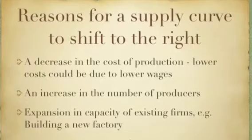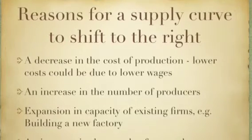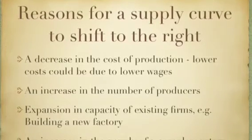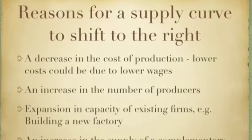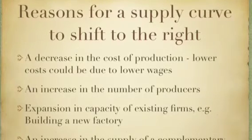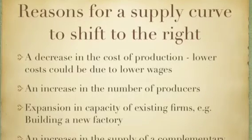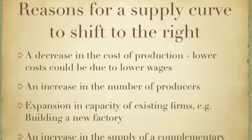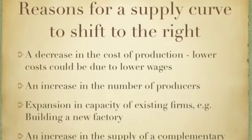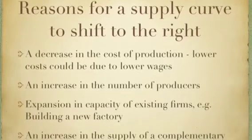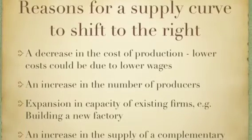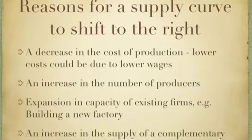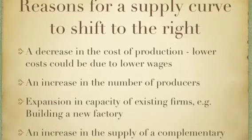If the cost is lower then they can produce more at the same price. Secondly, an increase in the number of producers will ultimately cause the supply curve to shift to the right, because if you have more producers this ultimately increases the output of the supply curve.